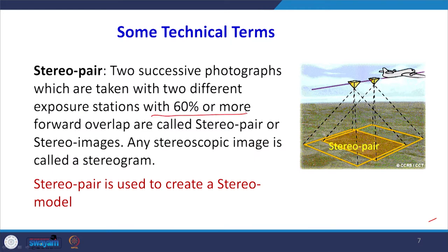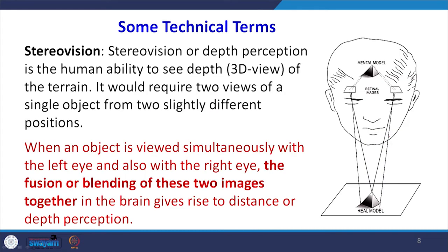There are some technical terms we have to understand before proceeding. One is the stereo pair, which is the basic requirement to study the terrain in three dimensions. A stereo pair consists of 2 successive photographs with at least 60 percent forward overlap. As shown in the diagram, the aircraft flying at positions O1 and O2 takes 2 images and there is overlap. In that overlap region we can create a 3D model — this is the stereo pair and this is the first requirement to create a stereo model.